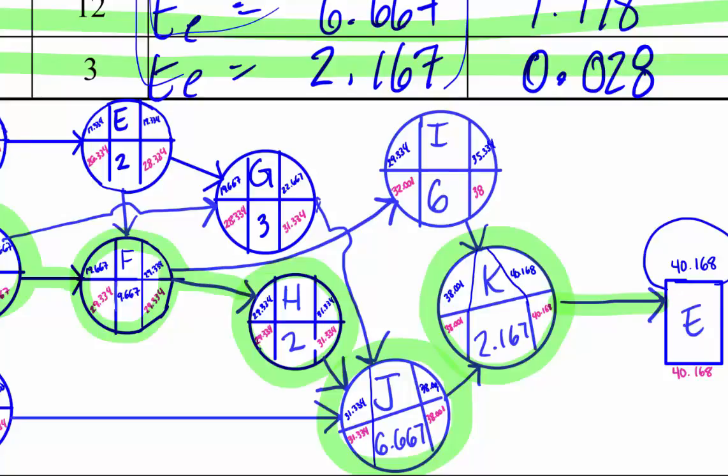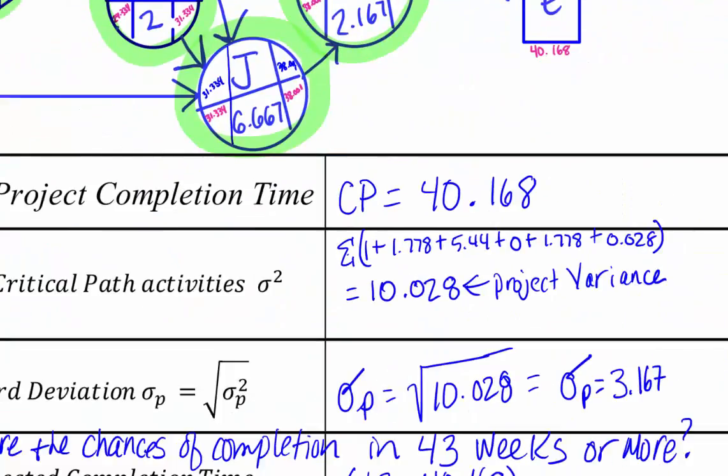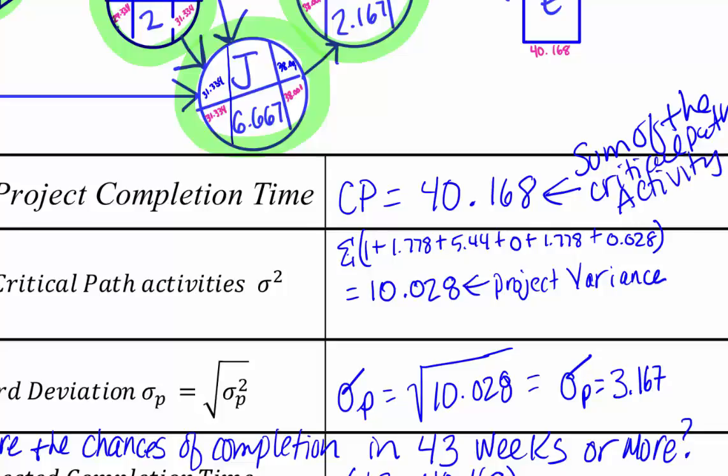So we go down here and the project completion time is going to be noted there. So this is going to be computed as the sum of the critical path activity times. Then we go here to this next box, and we're going to compute the sum of the variances of each of the activities on the critical path.